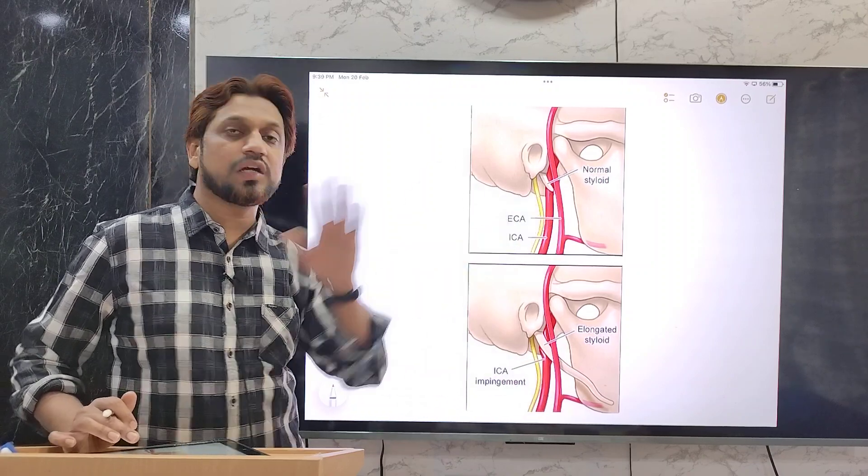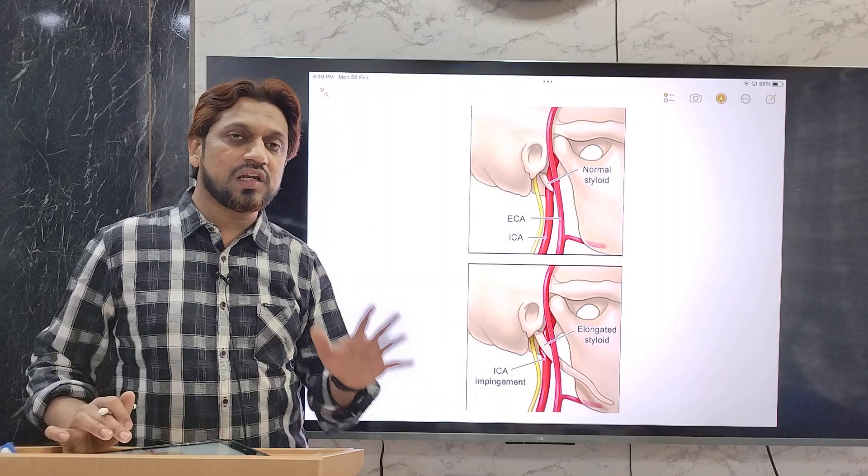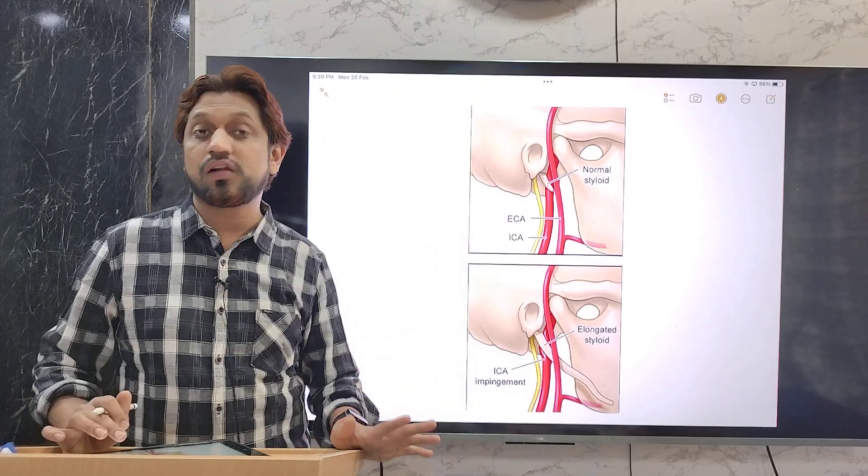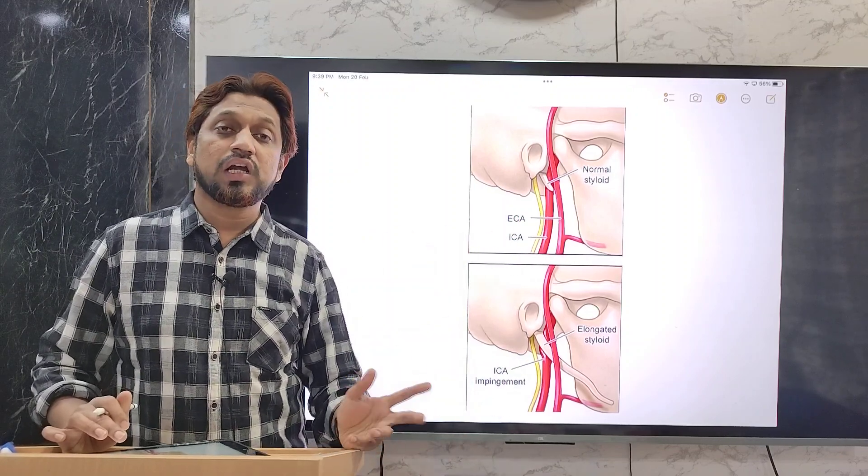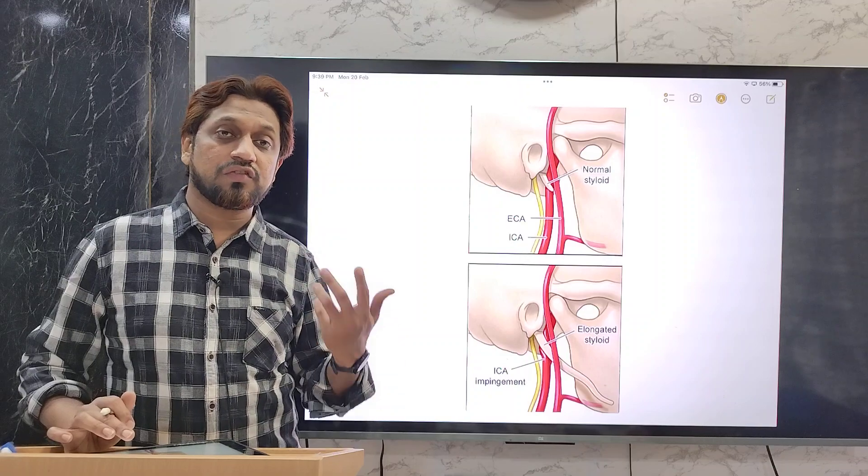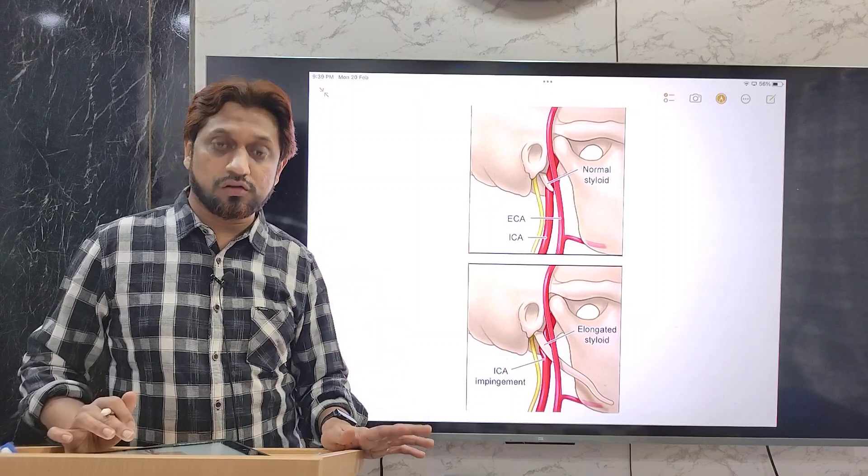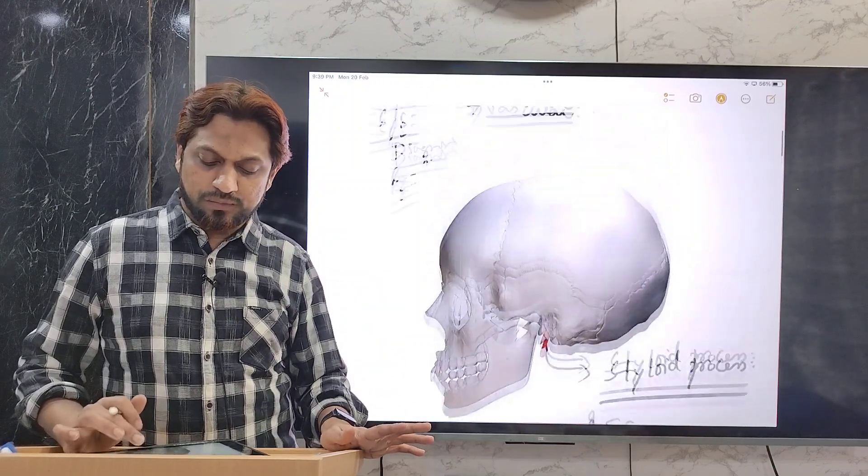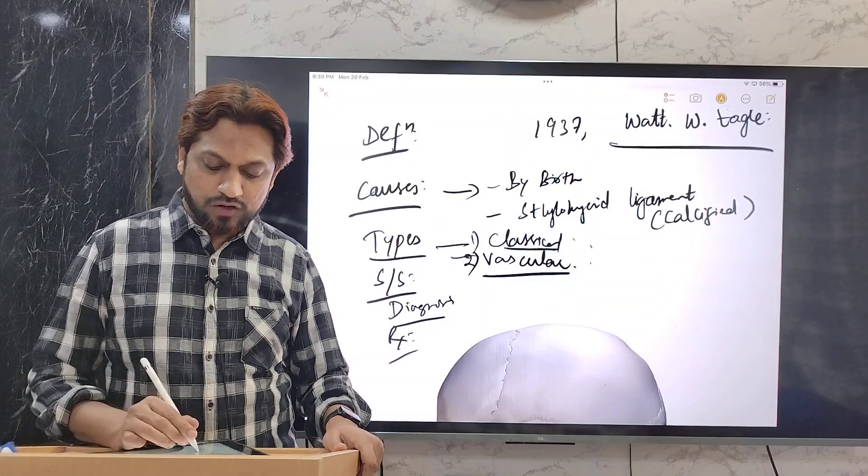This styloid process, if it compresses, if it gets enlarged, this is the normal, if this is the enlargement. Due to the enlargement, sometimes it will compress the internal carotid artery. That clinical signs and symptoms known as vascular Eagle syndrome, it may be very critical. It will lead to transient ischemic attack or even stroke also. Two types have been identified: one is classical, another one is vascular.